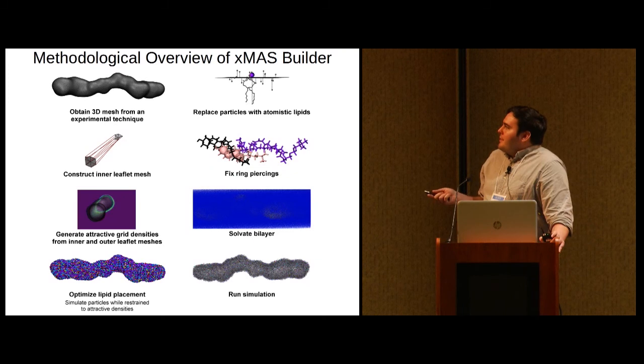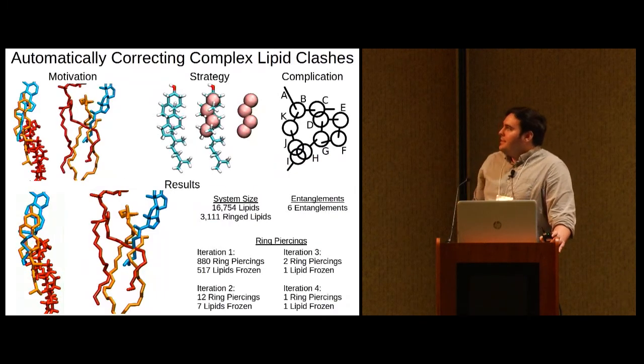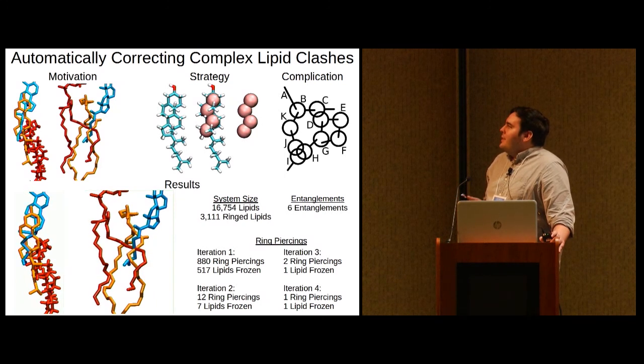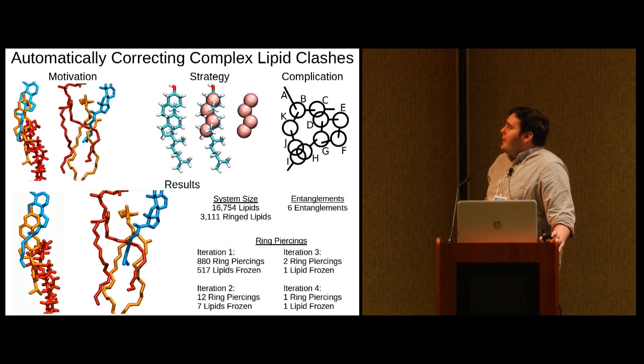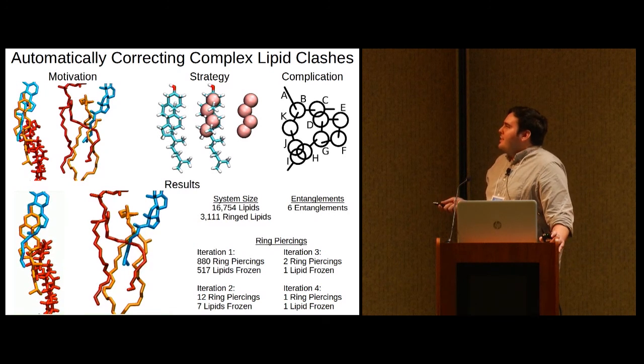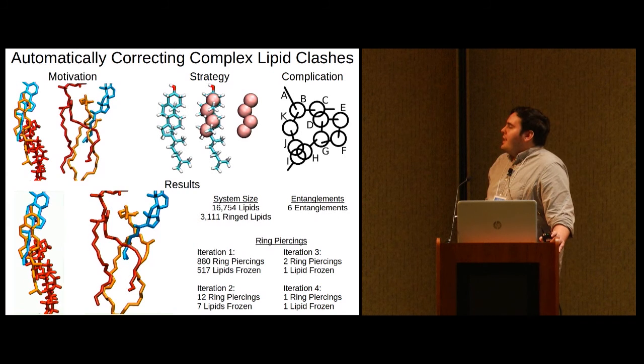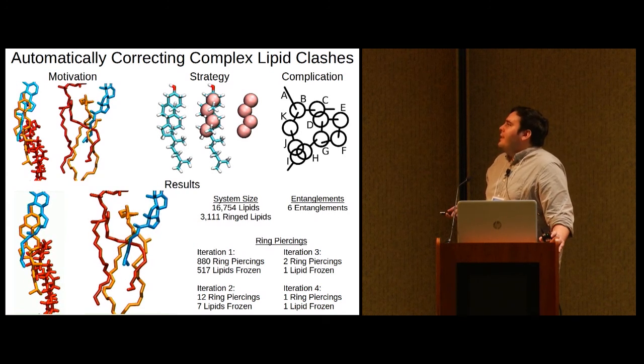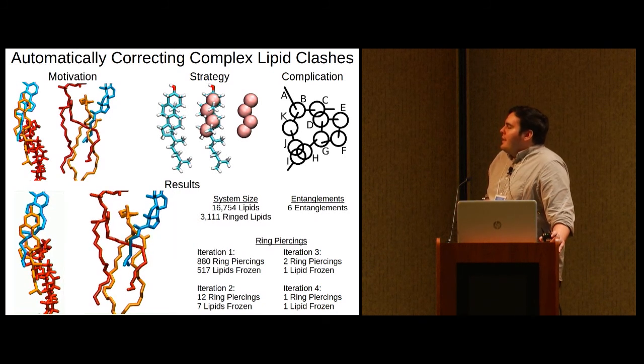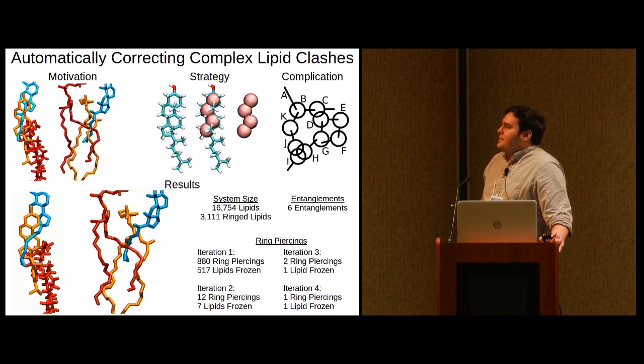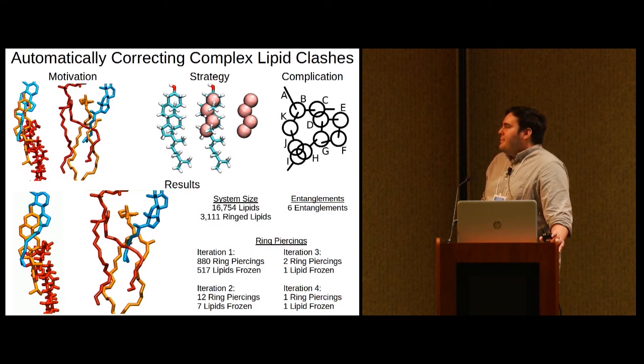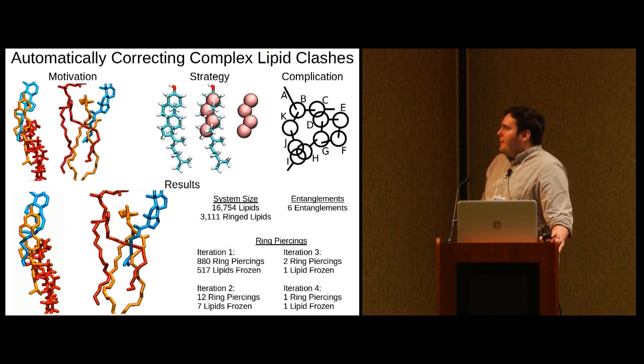So the next step I'd like to talk about is fixing ring piercings and other complex lipid clashes. A ring piercing is shown here. It occurs when the bond from one lipid passes through the ring of a second lipid. And then the second complex lipid clash is shown here. We've taken to calling this situation a lipid entanglement. It occurs when the bonds from three different lipids center on the same point in space. These are both unnatural situations that aren't found in nature. They will crash your simulation if you don't fix them.